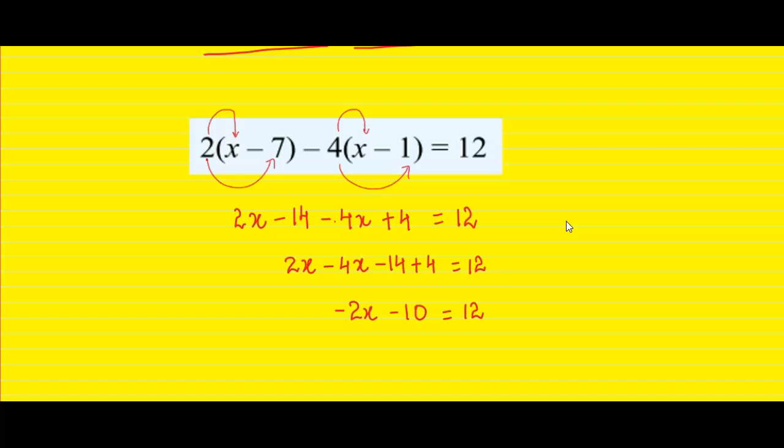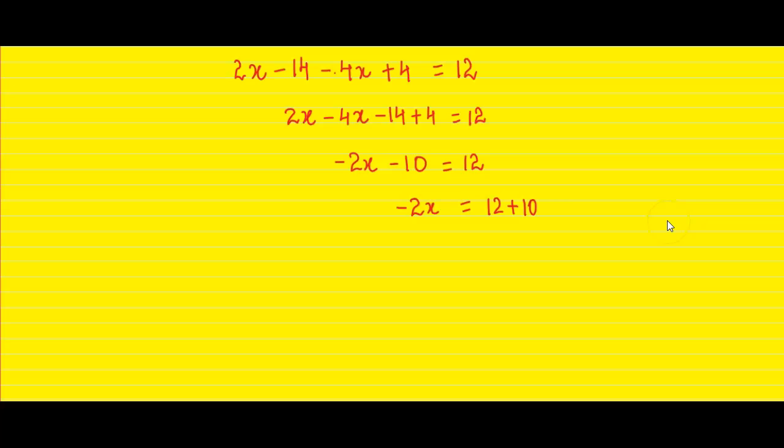Let's take 10 to the other side and it will get added when it goes to the other side. So we will have 12 plus 10 and negative 2x will be equal to 22. Now negative x will be equal to 22 divided by 2, and negative x is equal to 11.